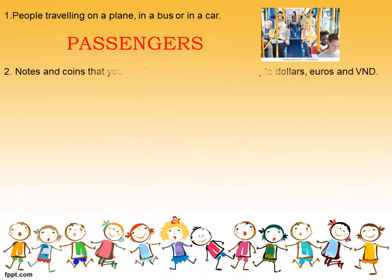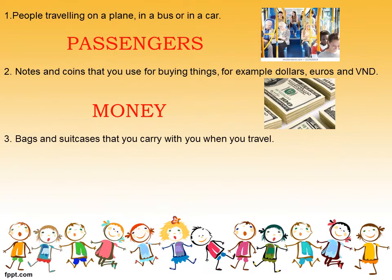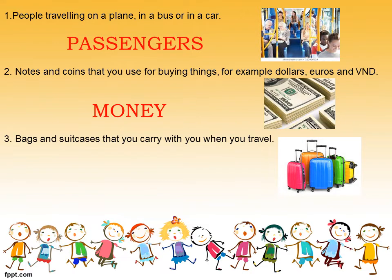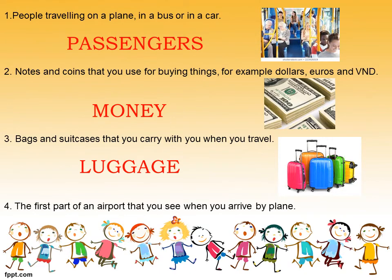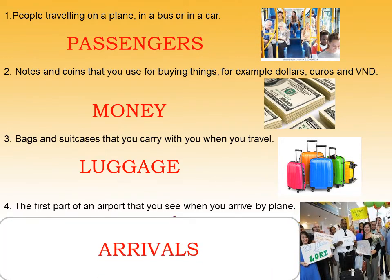Sentence number two: notes and coins that you use for buying things, for example dollars, euro, or Vietnamese dong. Sure, this picture and the word is money. Very good! Number three: bags and suitcases that you carry with you when you travel. Number four: the first part of an airport that you see when you arrive by plane. Exactly! This picture, and our word today is arrivals. Well done, everyone!